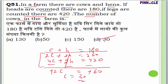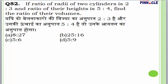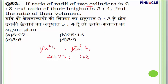You can also solve such questions by option technique. Question 52: The ratio of radii of two cylinders is 2:3 and the ratio of their heights is 5:4. The ratio of volumes is π·r²·h. Cancelling π, we get 2²×5 : 3²×4 = 20:36 = 5:9. Answer is D.